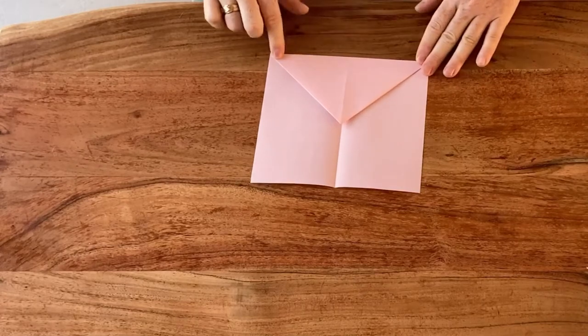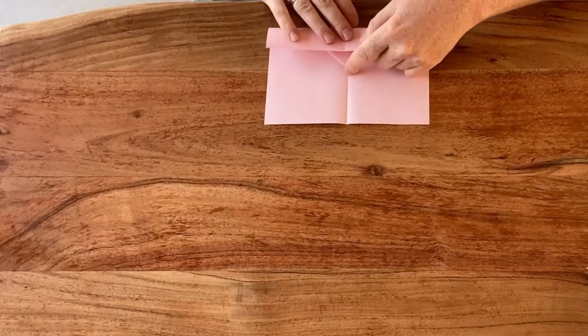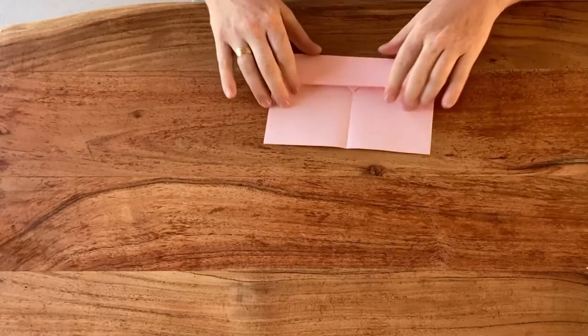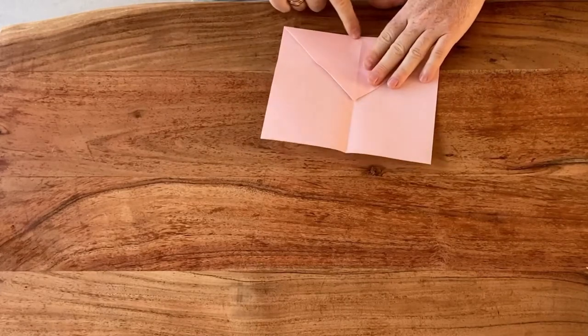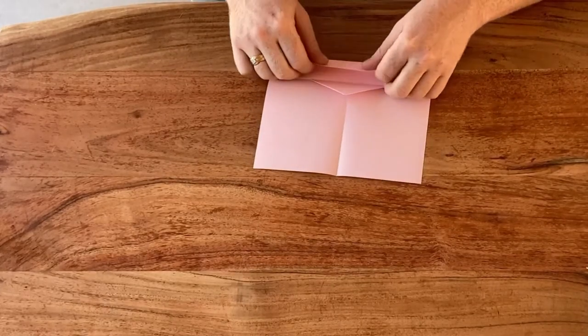What you're gonna do next is take this edge and fold it towards the tip here towards that point like so. Then we're gonna open that up again. We're gonna take this edge and fold it towards here towards our previous crease.